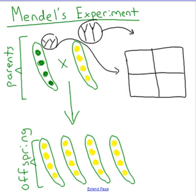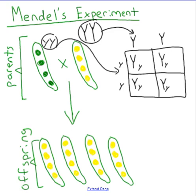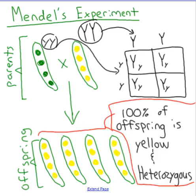Although he didn't know it at the time, this is what he was seeing with Punnett squares. He crossed homozygous dominant (big Y, big Y) with homozygous recessive (little y, little y). The results were all yellow peas — 100% of the offspring were yellow and also heterozygous (big Y, little y).